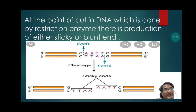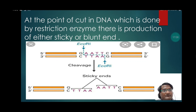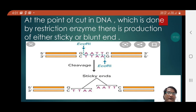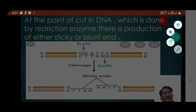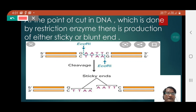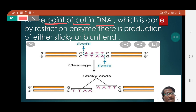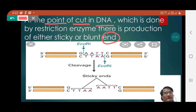At the point where restriction enzymes cut the DNA, there is production of either sticky ends or blunt ends. When the DNA is treated and cut by restriction enzymes, after the DNA is cut into two strands, the ends of those two strands either become sticky or blunt.